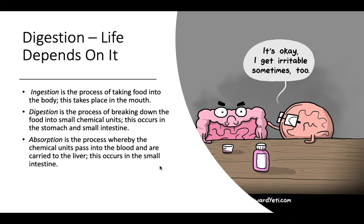Looking at digestion, we know that life depends on it. Some important terminology: ingestion is the process of taking food into the body, which takes place in the mouth. Digestion is the process of breaking down food into small chemical units, occurring mostly in the stomach and small intestine. Absorption is the process whereby chemical units pass into the blood and are carried to the liver, occurring in the small intestine.